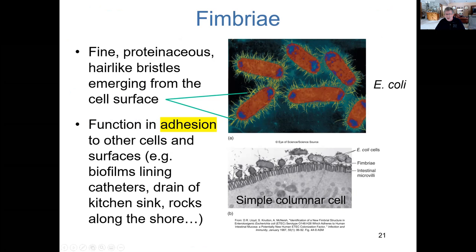Biofilms are often composed of cells using their fimbriae to attach to a substrate. In healthcare, catheters — such as heart catheters or urinary catheters — can become lined with bacteria utilizing their fimbriae to attach to the inner surface, which is a significant clinical problem.